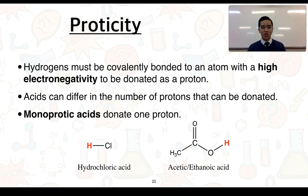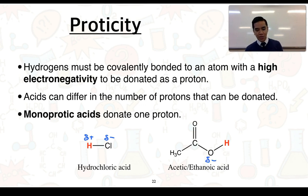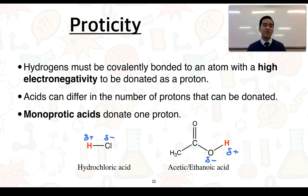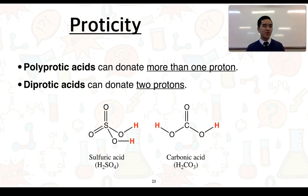In HCl, chlorine has a partial negative charge and hydrogen a partial positive charge; in acetic acid, oxygen has a partial negative and hydrogen the partial positive. This means the hydrogen may lose its valence electron to the chlorine or oxygen and be lost as a proton. Hydrogens bonded to carbon, on the other hand, form relatively non-polar bonds, so they will not form H⁺. Polyprotic acids are any acids that can donate more than one proton.